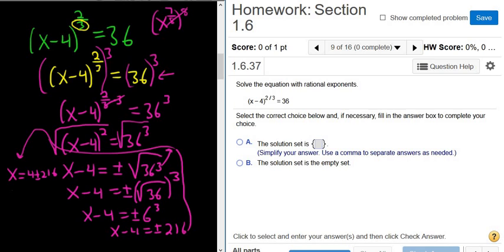So x is 4 plus 216, that's going to be x equals 220. So that's one answer. The other answer should be x equals 4 minus 216, and that will be negative 212.